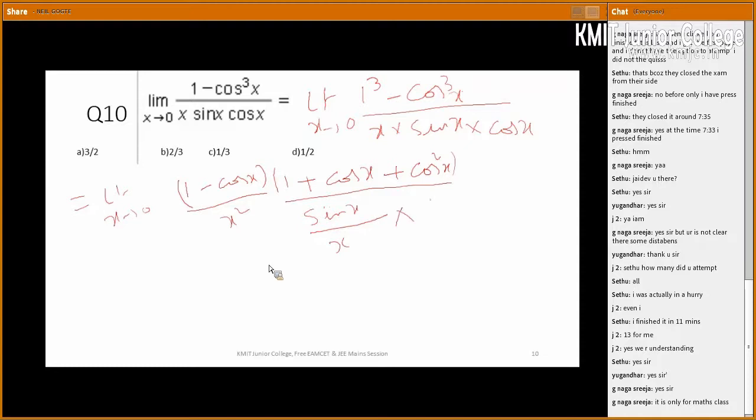this becomes 1 into cosx into cosx. Now, this became what? 1 only. This became 1 only. Now, you all of you know, in the beginning, the first, second problem also I have told you. Limit x tends to 0, 1 minus cosx by x². 1 minus cosx by x² is equal to 1 by 2. We use this formula for the previous problems.